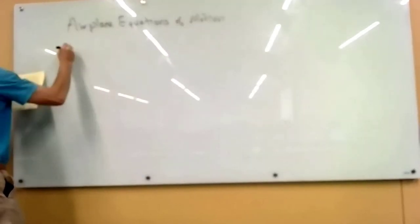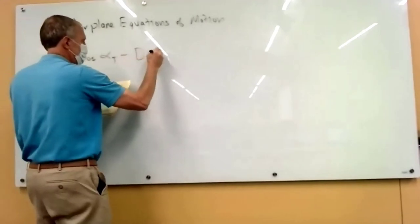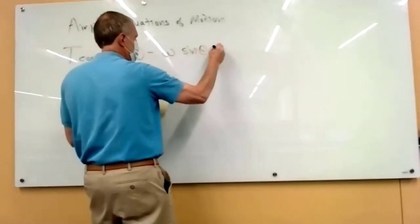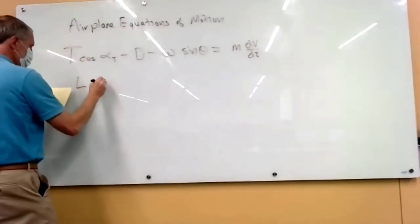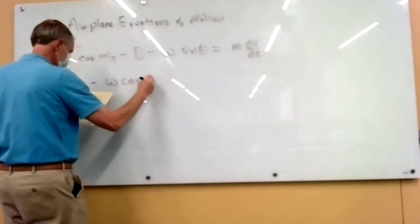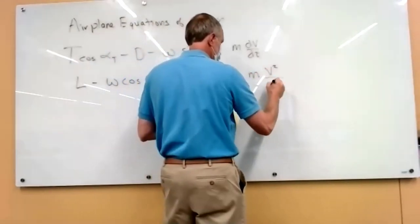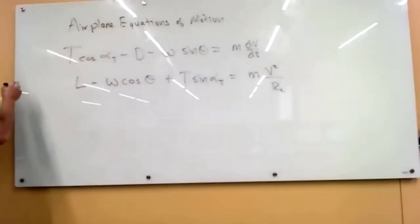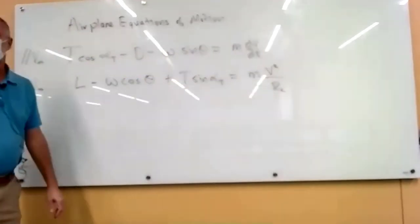So these are the equations that we derived last time. These are the equations perpendicular to V infinity, and these are parallel to V infinity. So these are the general equations for flight, includes acceleration and the curving flight.